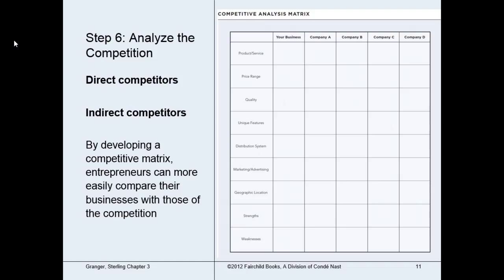You'll need at least two direct competitors if available, and the rest can be indirect competitors — I have you do three competitors total. The best way to research them is to go online or check annual reports for big companies, or to do mystery shopping. When looking at the competition, consider what major companies are in the industry, how many new firms have entered in the past five years, what new products have been introduced, what competitors compete on — price, selection, prestige, or customer service — and how difficult it is to enter the market.